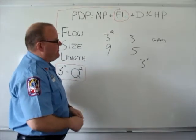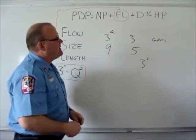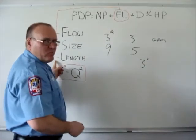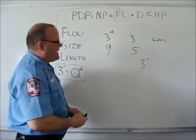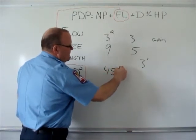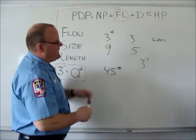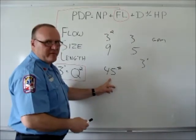The next thing that we would identify would be the length of hose, which we've already divided by 100 and it came up with five. So nine pounds per 100 feet, nine times five for 500 feet would give us 45 pounds. So the entire hose lay of 500 feet of three inch, 300 gallons a minute, there would be a total of 45 pounds of friction loss.